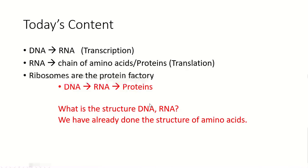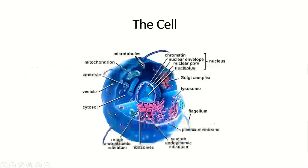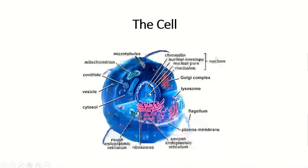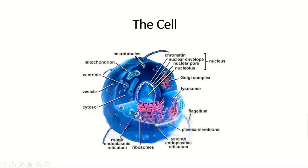Before going into detail, we should look at the structure of DNA and RNA. We have already done the structure of amino acids. This is the cell — I want to show you the ribosomes in it. In the nucleus there is genetic material inside, and then mitochondria is the energy organelle. The ribosomes appear as dot-like structures in the cell — this is the ribosome, the protein factory.